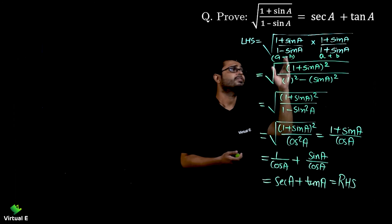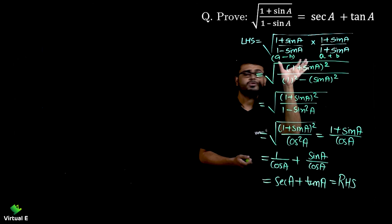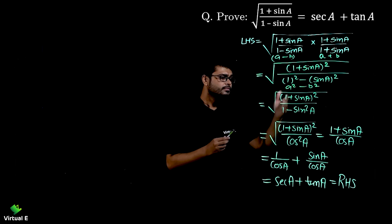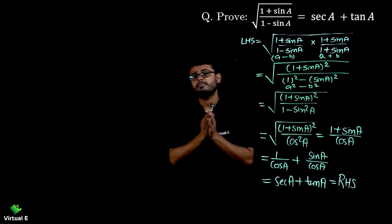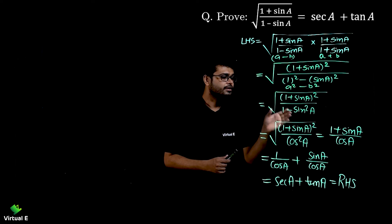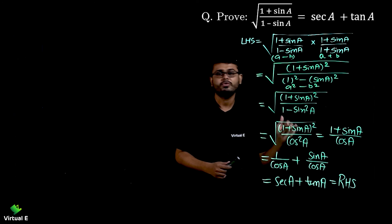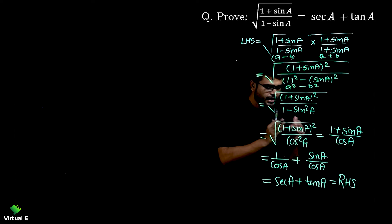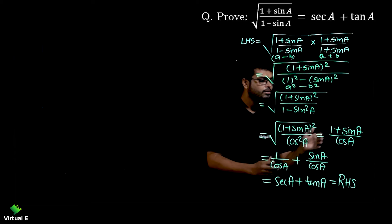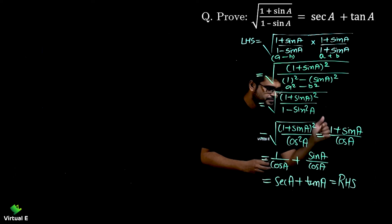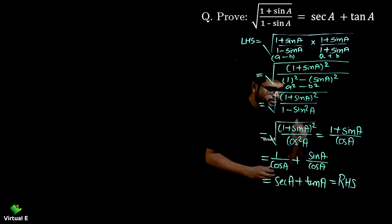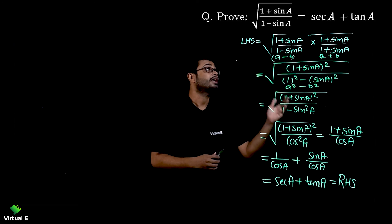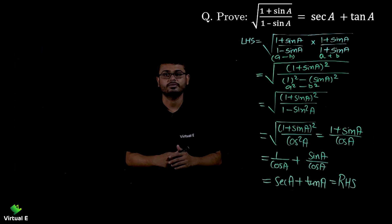So to recap: the square root was removed first using the conjugate (1 + sinA). The numerator became a perfect square and the denominator used the identity a² - b². Then we used sin²A + cos²A = 1, so 1 - sin²A = cos²A. Removing the square root gives (1 + sinA)/cosA, which splits into secA + tanA — that is our RHS. Now let's discuss another problem.